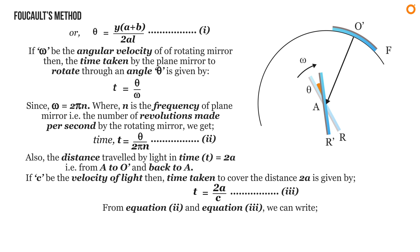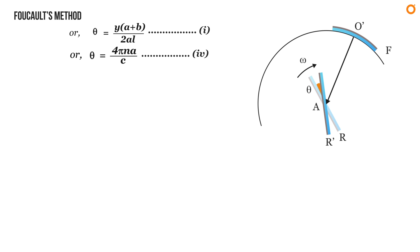From equation two and equation three we can write 2A divided by c equals theta divided by 2 pi n, or theta equals 4 pi n A divided by c. Let it be equation four. Now from equation one and equation four we have Y times (A plus B) divided by 2AL equals 4 pi n A divided by c.